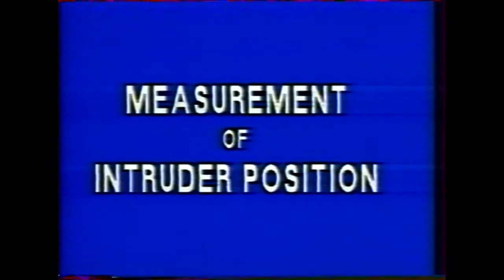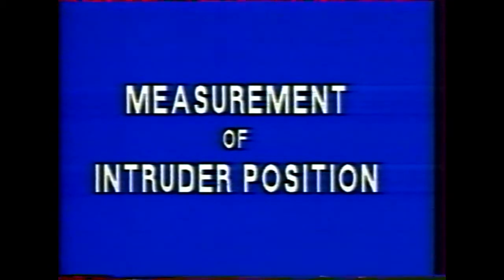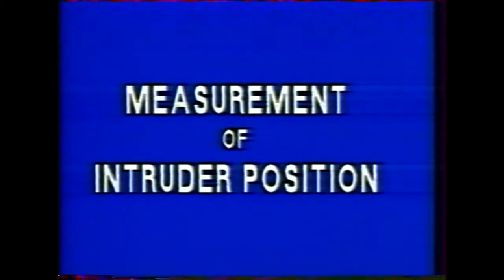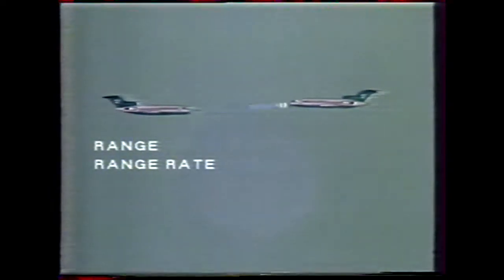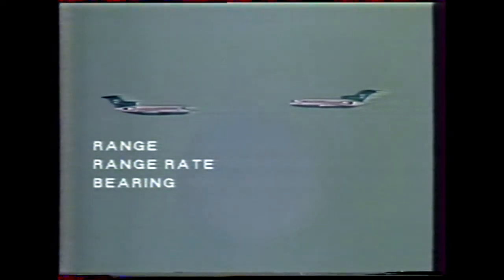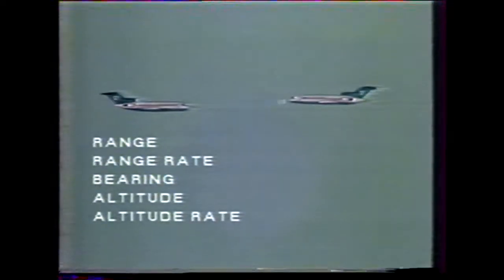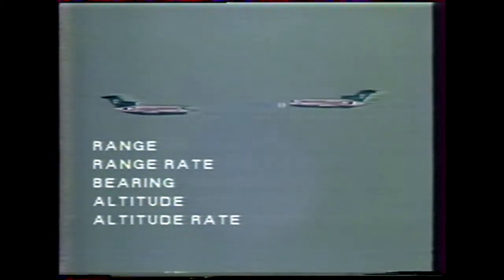Measurement of intruder position. TCAS equipped aircraft periodically interrogate ATC transponder equipped aircraft in their vicinity. From the responses, range, range rate, and bearing are computed for each aircraft once per second. Altitude and altitude rate are computed for altitude reporting aircraft.